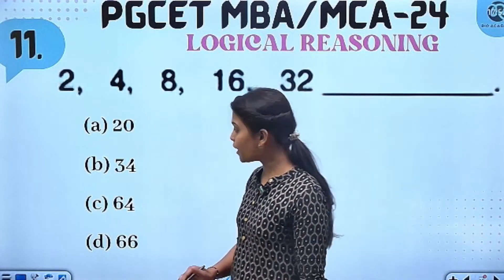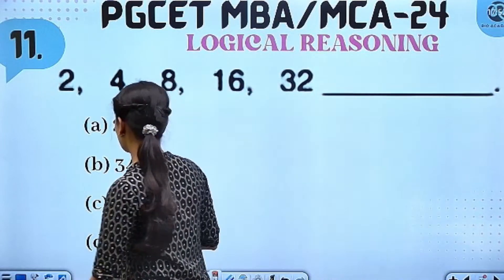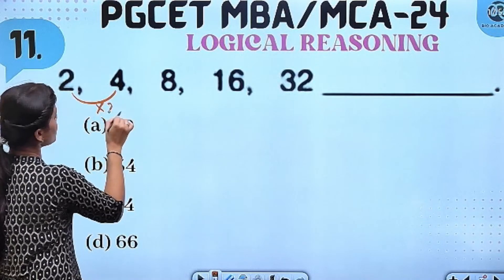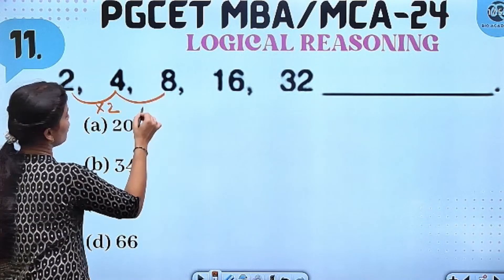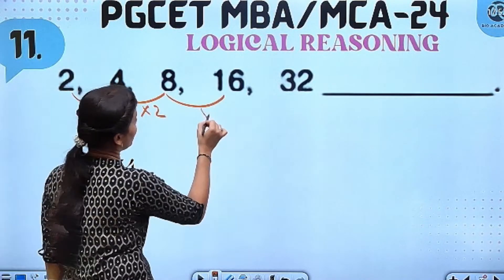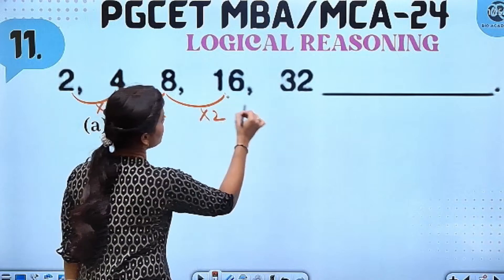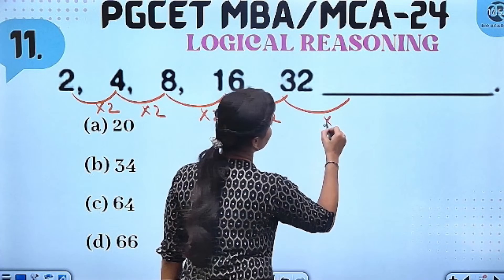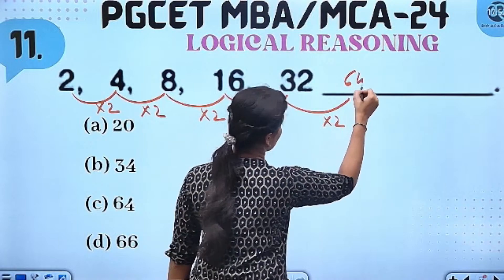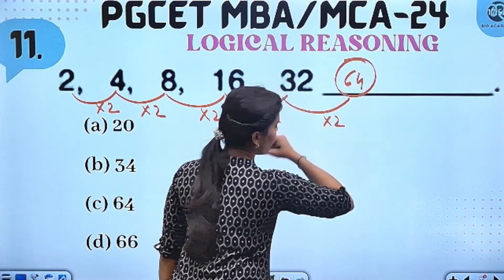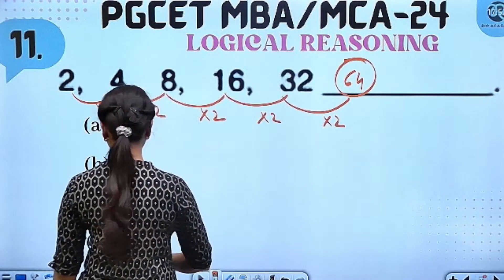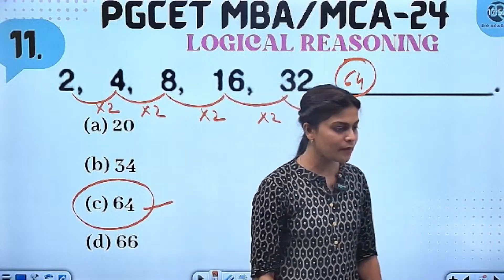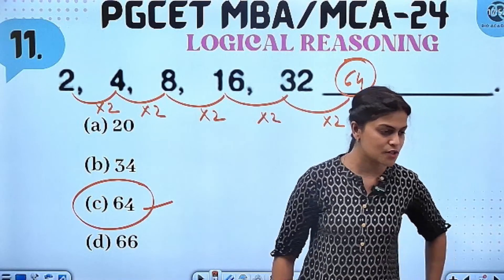Yes. So, next we see the body. Right? So, this one is: 2 twos are 4, 4 twos are 8, 8 twos are 16, 16 twos are 32, and then 32 into 2 is 64. So, 64 is the answer. Yes. Right? Yes, Rudraish.